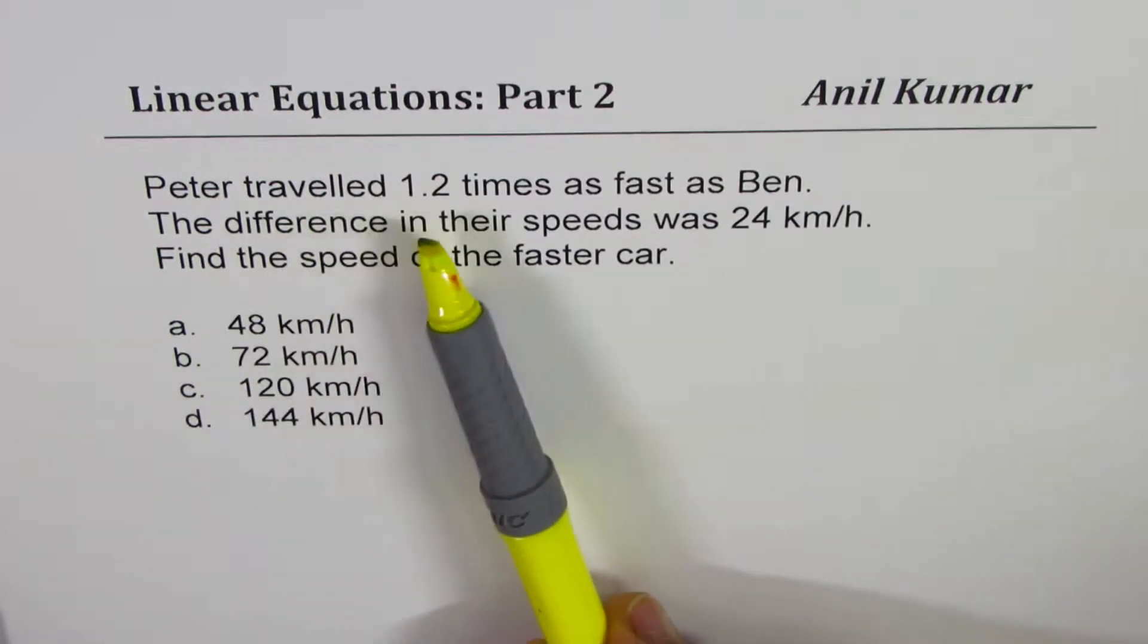Peter traveled 1.2 times as fast as Ben. The difference in their speeds was 24 km per hour. Find the speed of the faster car.